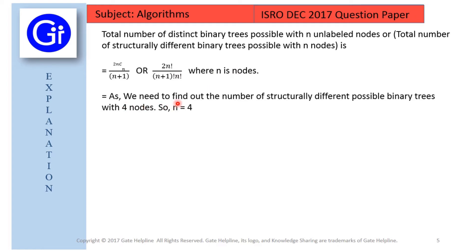As we need to find number of structurally different possible binary trees with four nodes, so here n equals to 4. So we just substitute the value of n equals to 4 in the first formula, that is 2nCn upon n plus 1. So here 2n becomes 8C4 upon 4 plus 1.